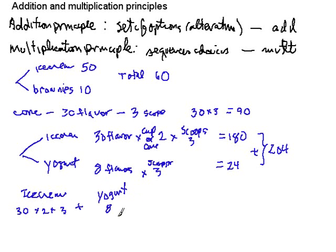We found there were 8 flavors and each could have one of three scoops, so we have 180 here plus 24 choices here for a total of 204. I think this shows you how you can use these two principles or a combination of these principles.